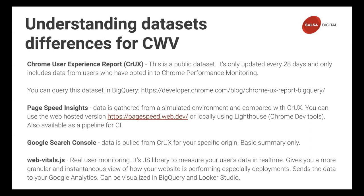Web-vitals.js is the library that, if you install and set it up on your site, you can get real-time monitoring. If you deploy something, you can see instantaneously how these metrics fluctuate. It also gives you a more granular view of your website metrics — for example, it can tell you for a specific URL what div, class, or ID you need to target, which you will see in the demo.